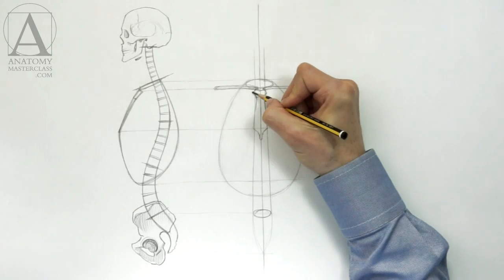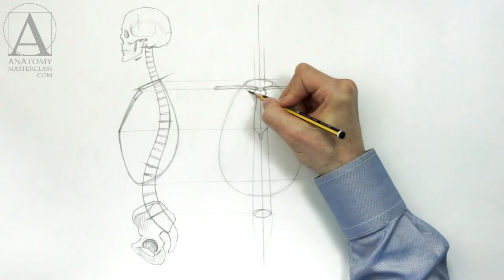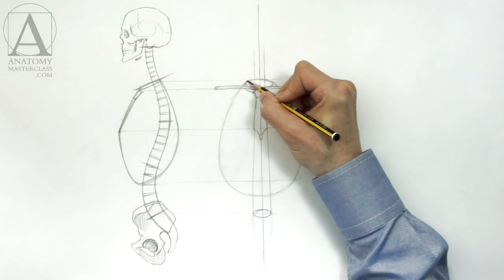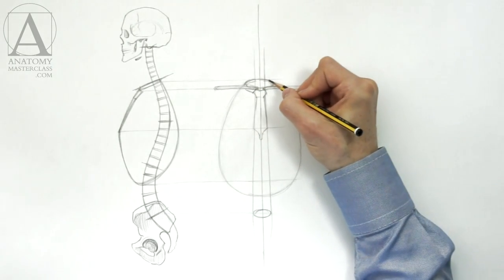Just below the collarbones, the first pair of ribs is attached to the breastbone. This pair defines the base of the neck and is as wide as the neck itself.